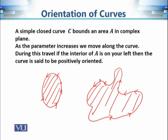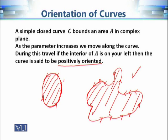If we are traveling along the curve and the area enclosed by the curve is always on our left side, then we say the curve is positively oriented. When traveling along the circle counter-clockwise, the enclosed area is always on the left side. Similarly, for another simple closed curve, if we can verify that the area is always on the left, it is positively oriented.